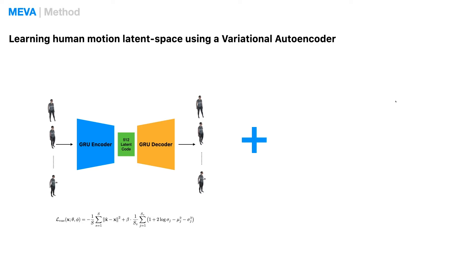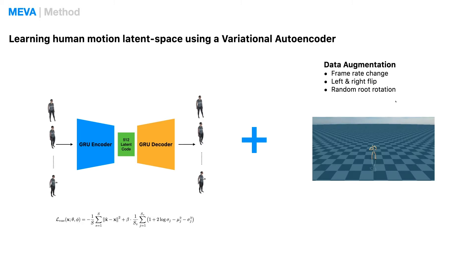As we want to learn a robust latent space that can represent a broad spectrum of human motion, this VAE needs to generalize well.